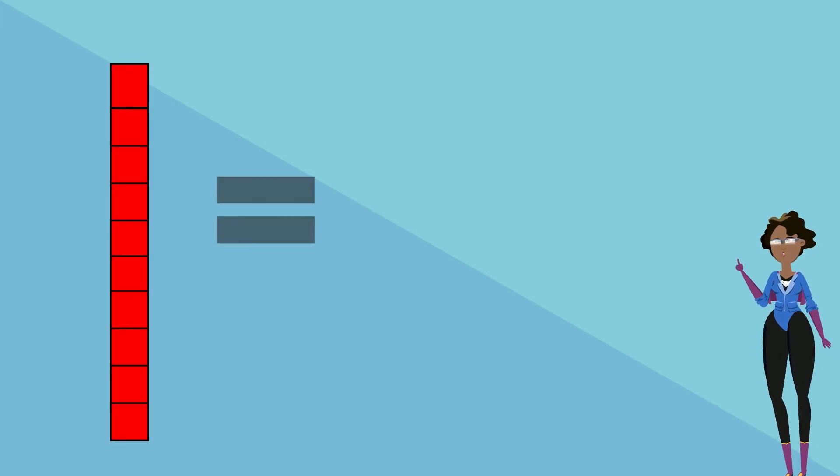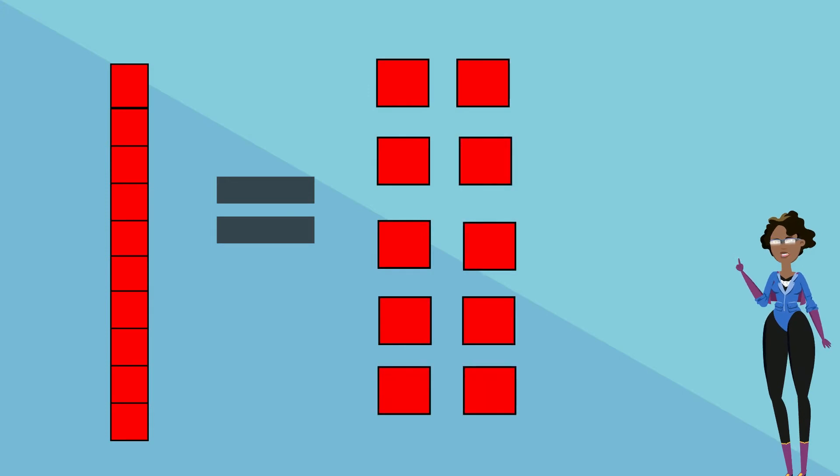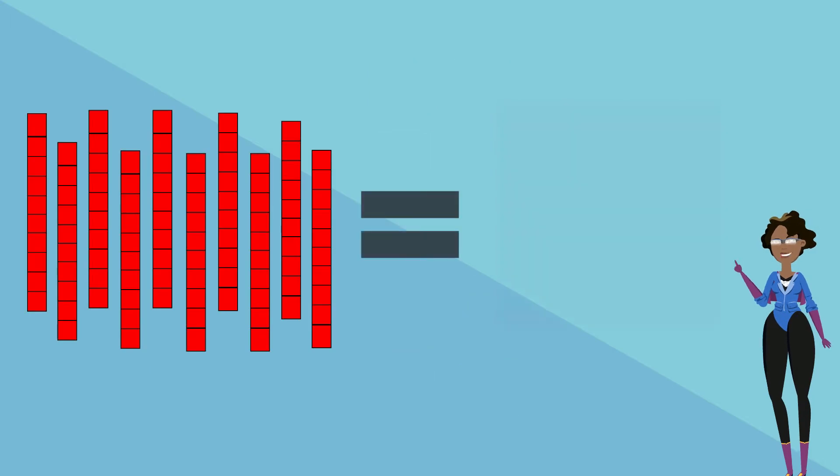Here are some important things that you should know. One ten is equal to ten ones, and ten tens is equal to 100.